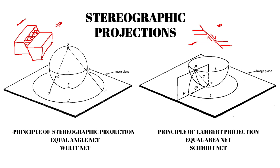The first is the principle of stereographic projection, also known as the equal angle net or Wolf net. The second is the principle of Lambert projection, also known as the equal area net or Schmidt net. Commonly we refer to them by these two names.